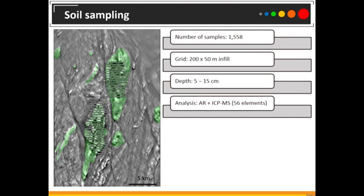Decisions to make include grid size. We originally did quite a wide-spaced grid, just seeing if we could detect different geochemical signatures across these intrusions — and that was successful, so we went back in. Because we're looking for nickel deposits, the signal can be quite small since we don't get the same alteration dispersion generally. So we used a close-spaced grid of 200 by 50 metres, sampled fairly shallow at 5 to 15 centimetres to get some lateral movement. We used aqua regia and a multi-element package — 56 elements, essentially the whole package. The idea is to use this data to try and map basement geology through that cover, not just go out looking for commodity elements.